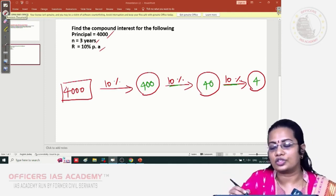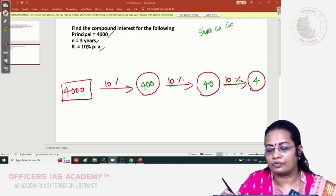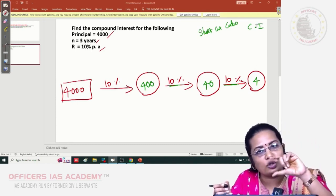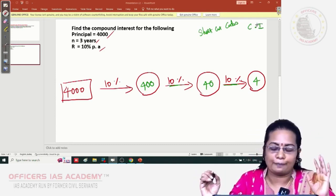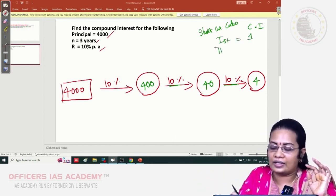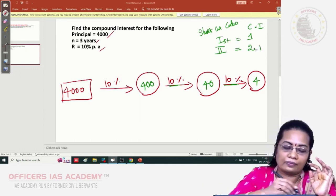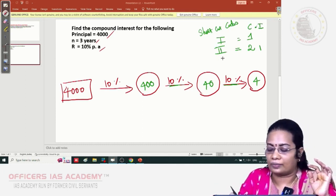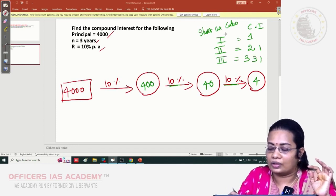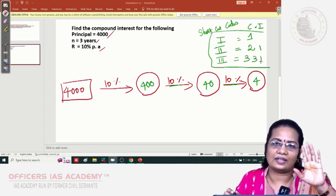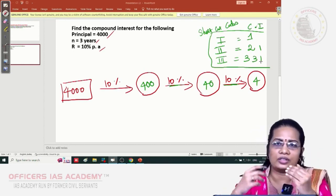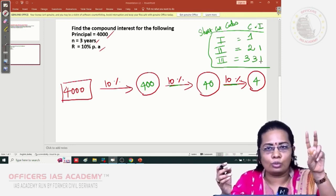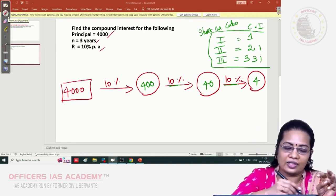One more step to follow. I will give you the shortcut code. For every year while dealing with compound interest, there is a code value. For the first year, the code is 1. For the second year, the code is 2, 1. For the third year, the code is 3, 3, 1. You want to memorize these three things. For the fourth year onwards, you can create the codes.